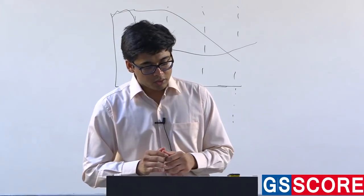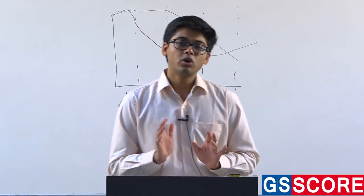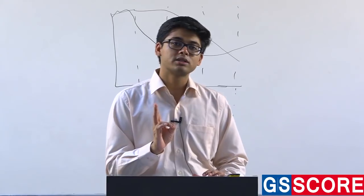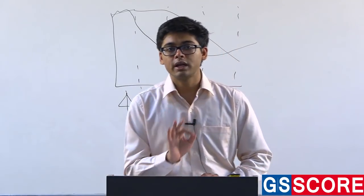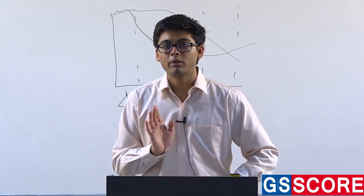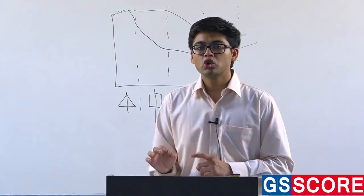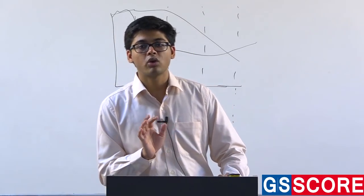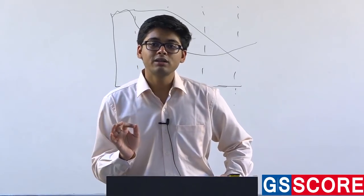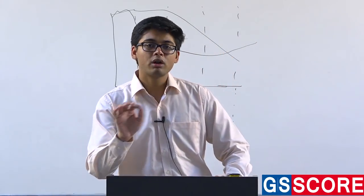Now I will talk about the importance of maps and diagrams in Paper 2. Adopt this formula: for 20-mark questions draw at least 3 diagrams, for 15-mark questions at least 2 diagrams, and for 10-mark questions at least 1 diagram. By diagram I mean maps, flowcharts, models, or any kind of sketching on your answer sheet. This is very important — geography requires visual representation. It is not completely about letters and words; it is also about drawing.